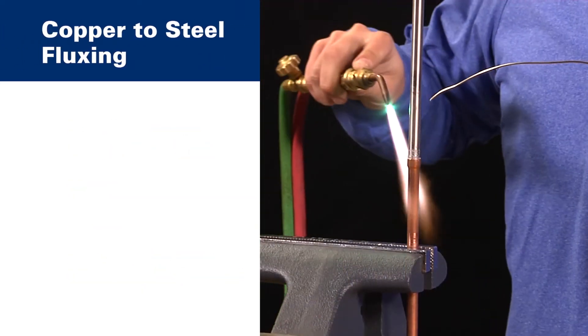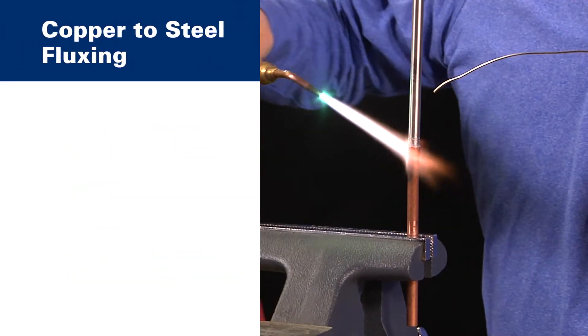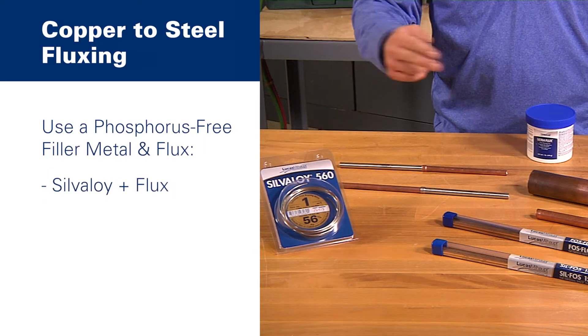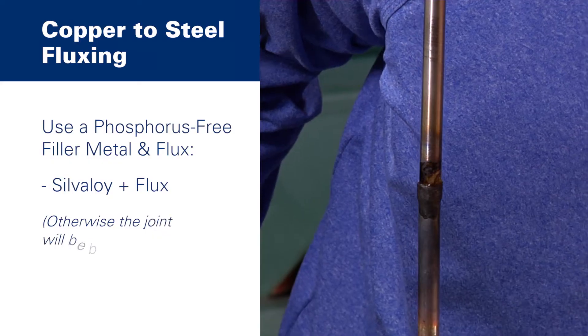If you're braising copper to steel, as typically found in compressor or valve assemblies, you'll need to use a phosphorus-free filler metal like Silvoloy plus flux. Otherwise, the joint will be brittle.